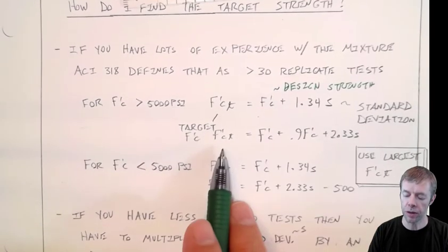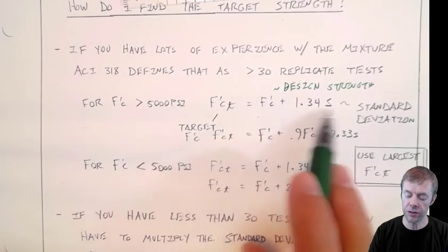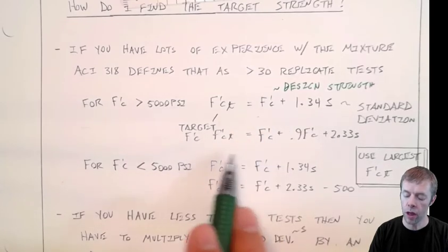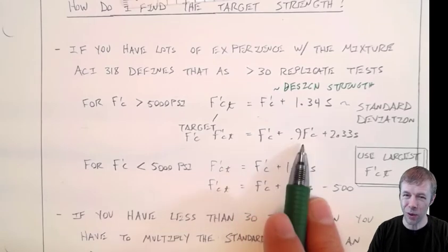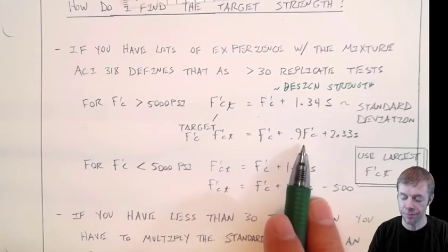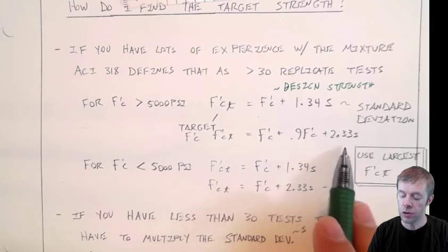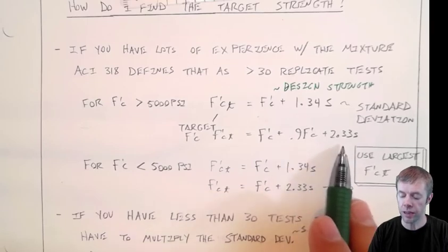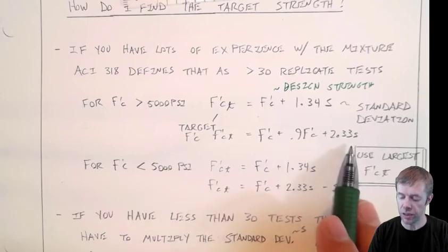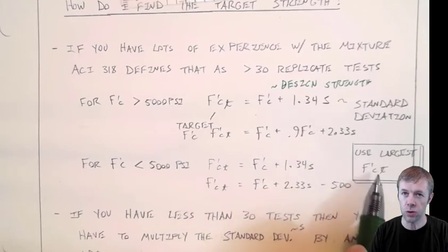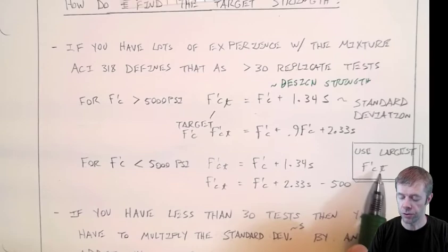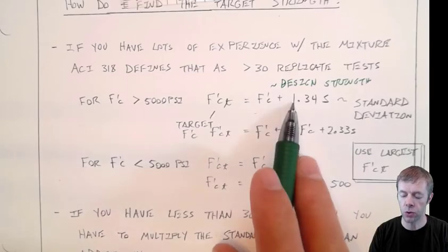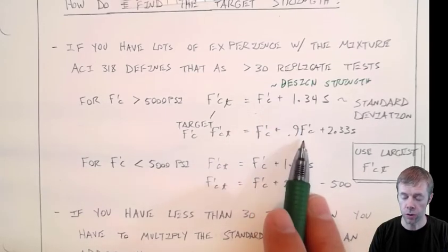Another equation, another way to express this, you would check this and you would check this equation as well, would be F'C design strength plus 0.9 of F'C plus 2.33 times the standard deviation. And you are going to use the largest F'CT for your design. From whichever comes out of these two equations, you'll use the larger one.